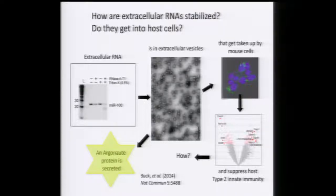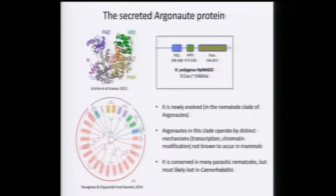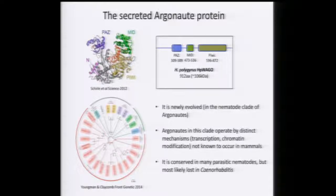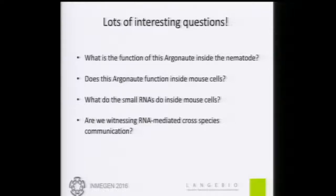One of the interesting things Amy found was that the vesicles also include an Argonaute protein—not only are small RNAs inside the vesicles, but these small RNAs may already be loaded into an Argonaute protein. This Argonaute is a bit strange—not the traditional Argonaute known to be involved in microRNAs, but a worm-specific Argonaute. Worms have many more Argonaute family protein members than mammals or vertebrates, and many of these Argonautes function in different ways, not all involved in post-transcriptional gene silencing—some are also involved in transcriptional gene silencing. So we have a lot of interesting questions and not that many answers yet.